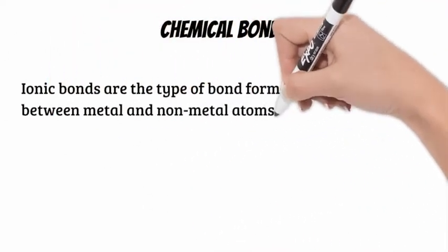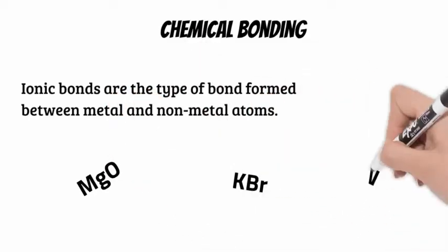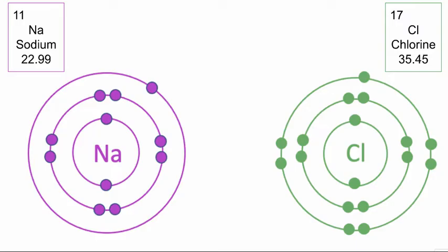These bonds are formed between metal and non-metal atoms. Let me show you how this works with a couple of examples. Here we have a sodium atom and a chlorine atom. Sodium is number 11 on our periodic table.